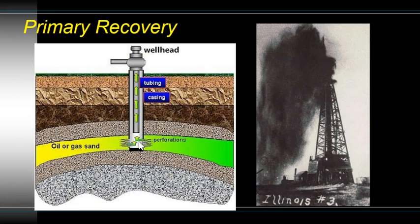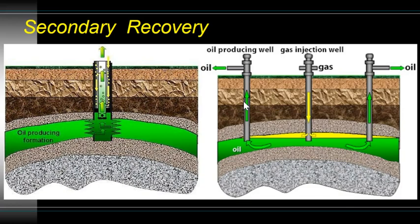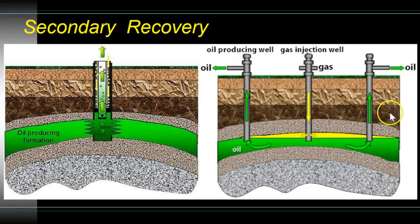When you first tap into a new reserve, the oil comes out on its own — pressure from the rock layers above pushes the oil out. At some point you lose that pressure and move into the secondary recovery phase, where you need to actually pump the wells. You insert either a gas or a liquid to push the oil up into the producing wells, so in secondary recovery you'll also have an injection well.